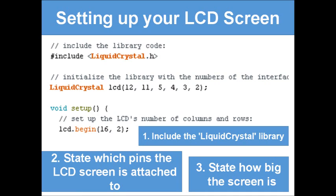The third step is to state how big the screen is. In your void setup loop, you write `lcd.begin(16, 2)` for a 16x2 screen. If you were using a 20x4 screen, you'd write `lcd.begin(20, 4)` instead.